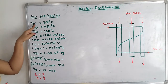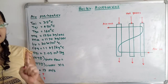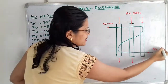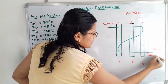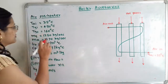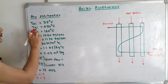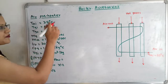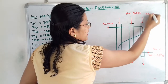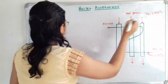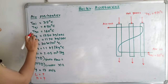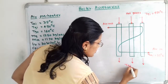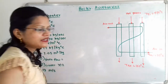It is given that the temperature of air at the entrance is 35 degree Celsius, so we mark TAI on the diagram. The temperature of gases at the inlet TGI is 450 degree Celsius, and at the outlet TGO is 160 degree Celsius. We mark these temperatures on the diagram accordingly.